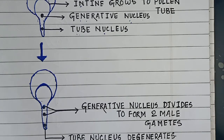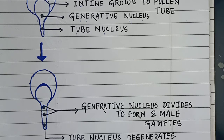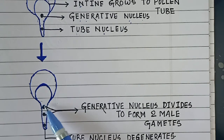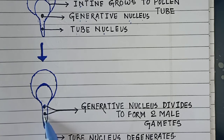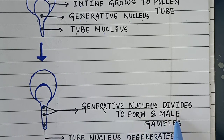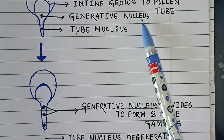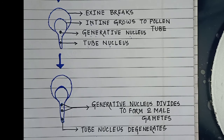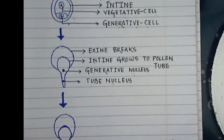In the last stage, male gamete formation takes place. The generative nucleus, upon entering the pollen tube, divides to form two male gametes. The tube nucleus, however, ultimately degenerates after a certain period of time.